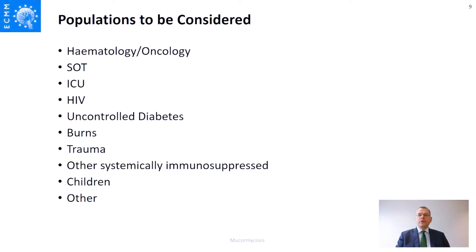There are many populations to consider, but the last line is perhaps most important: 'other' — for example, 'children' means we would address neonates as a separate group if appropriate for the given fungal infection. 'Other' practically opens it up to any population that should be represented and dealt with in the guidelines.